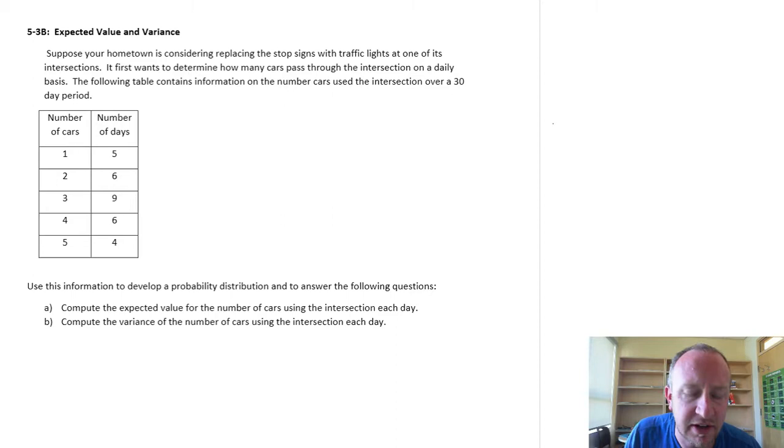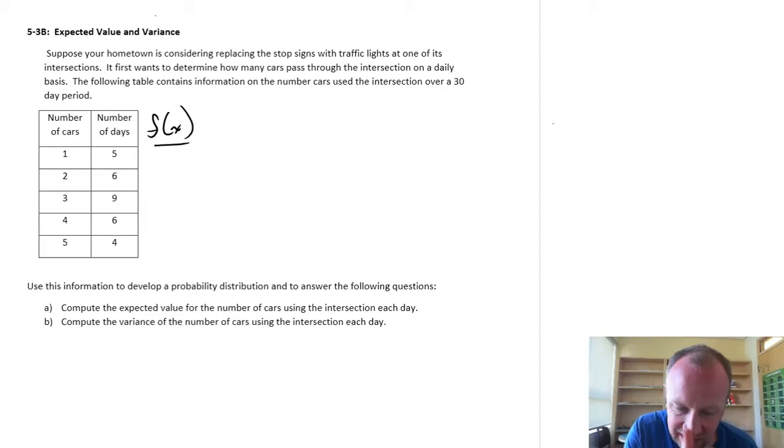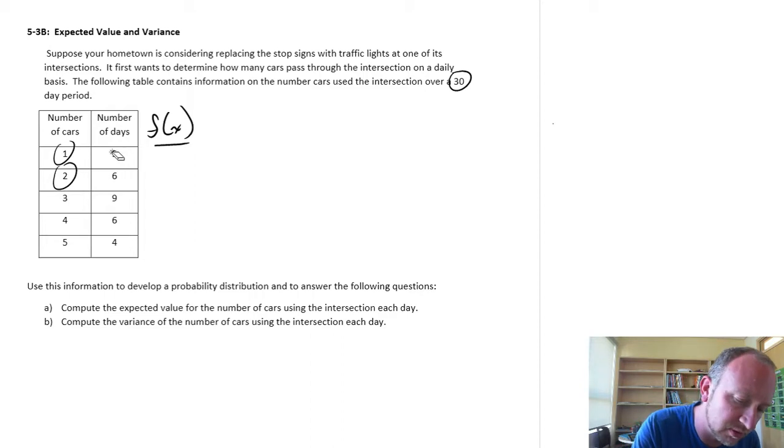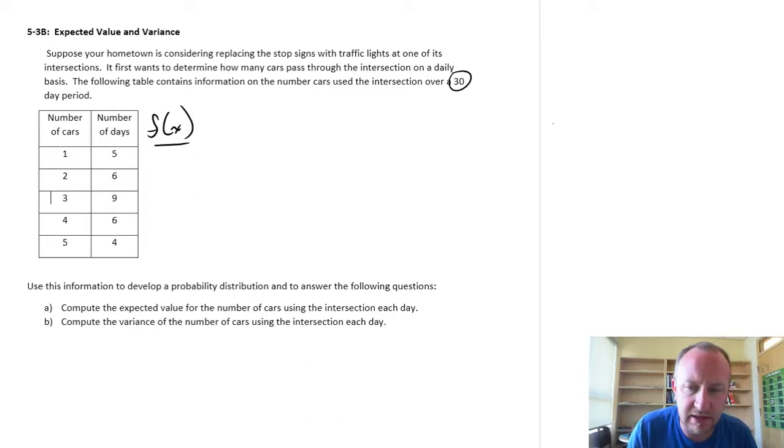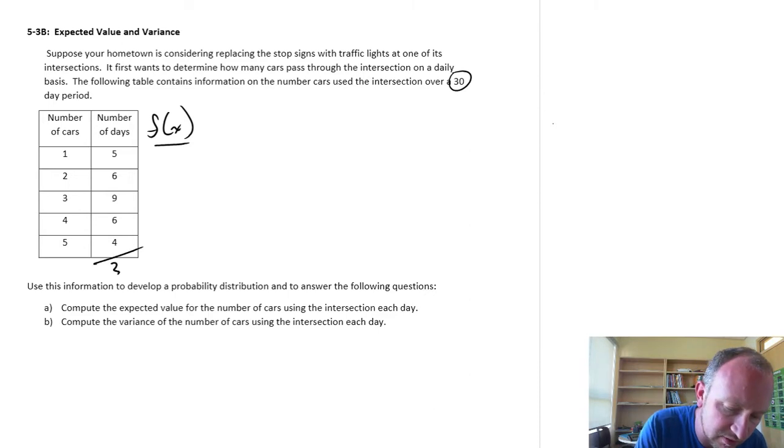So the very first thing that we need to do here is calculate our relative frequencies. Looking at this data, we're looking at number of cars per day. We have 30 days of data: 5 days saw one car, 6 days we saw two cars crossing, and so on and so forth.